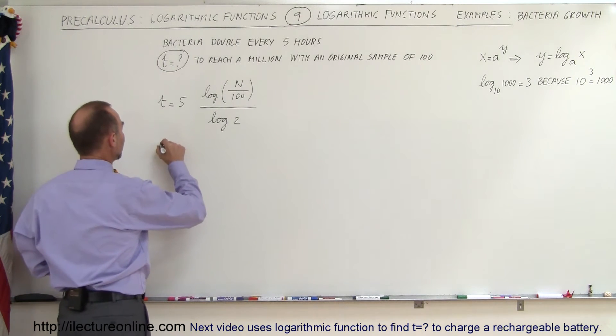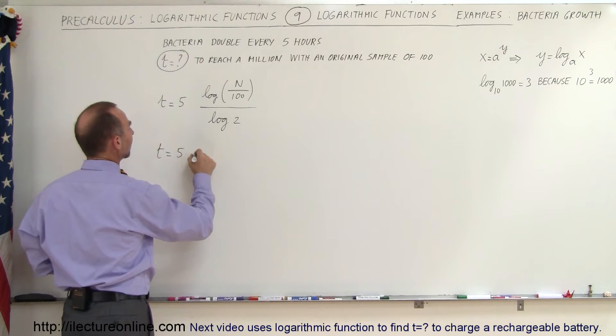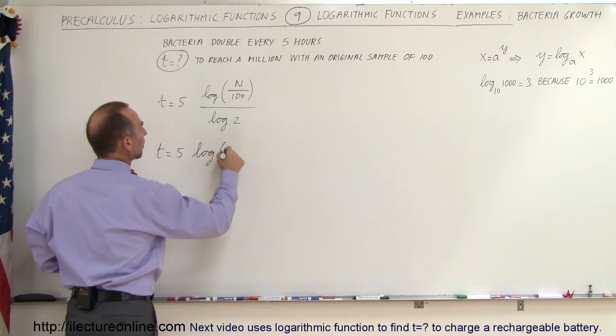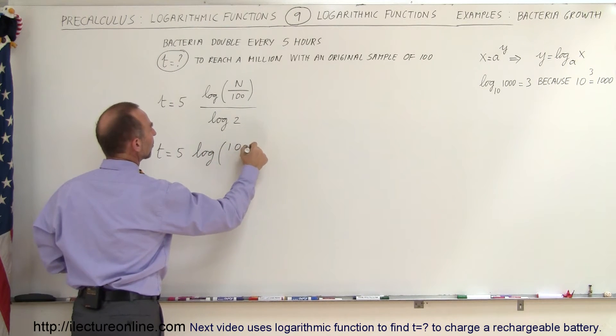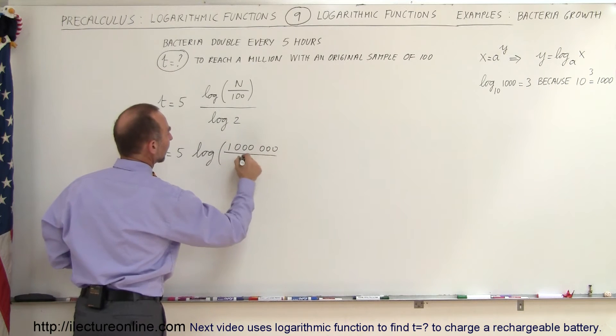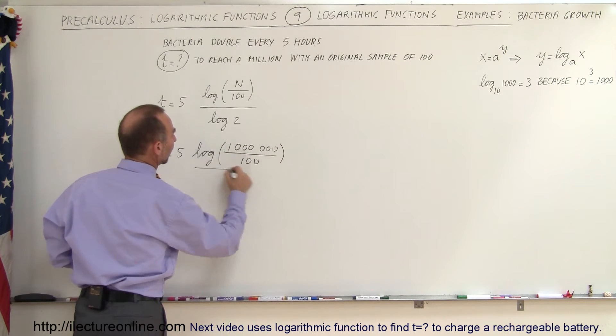So in this case the time would be equal to 5 times the log of the number that we want to end up with, which is a million, divided by the number that we started with, divided by the log of 2.